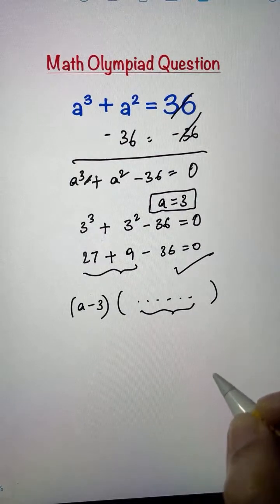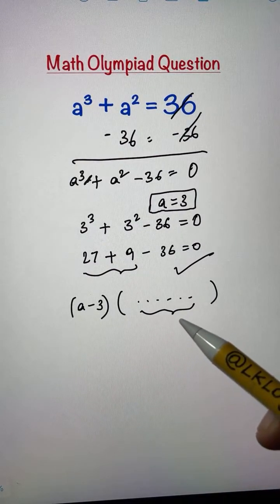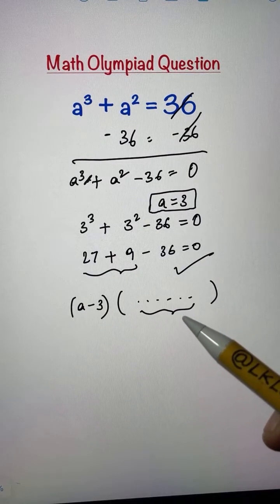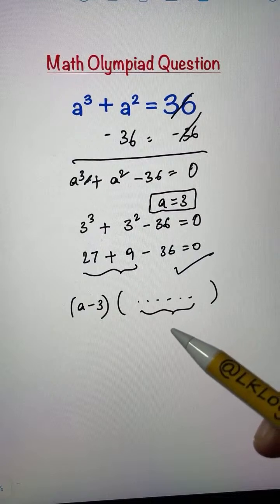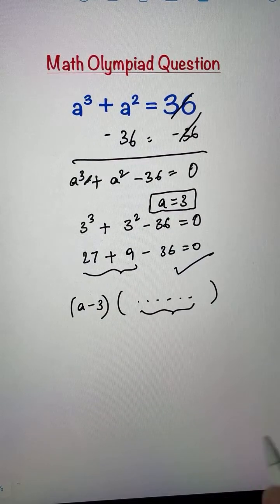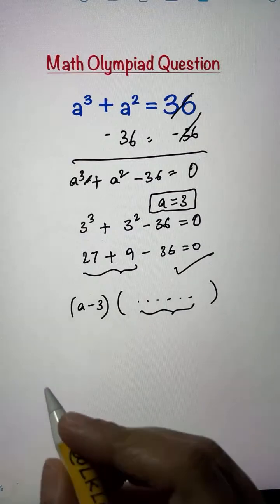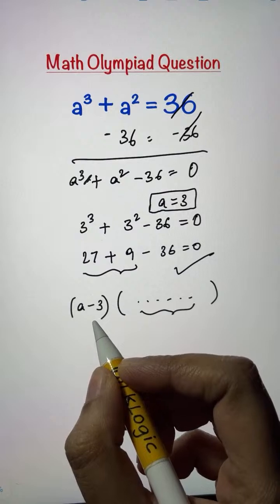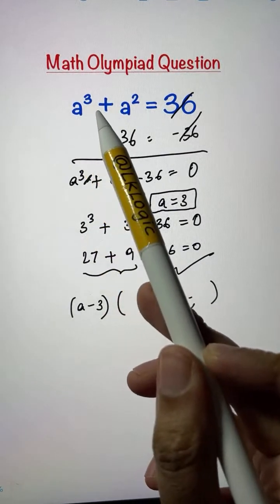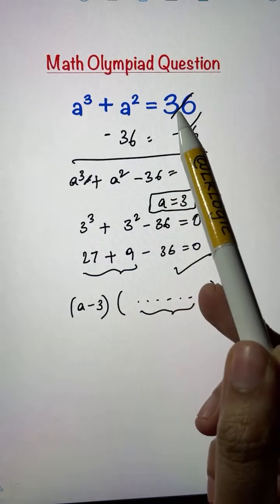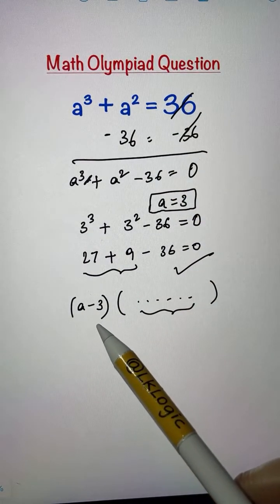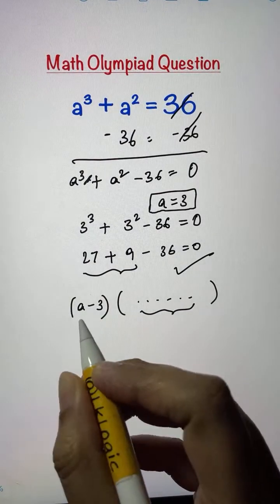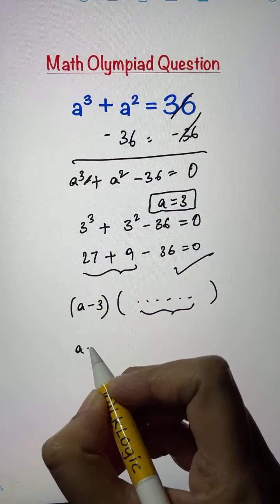To find the other factor, we can use long division or identities. I'm going to use the long division method. We have the factor (a minus 3), so I'm going to divide a cubed plus a squared minus 36 by (a minus 3).